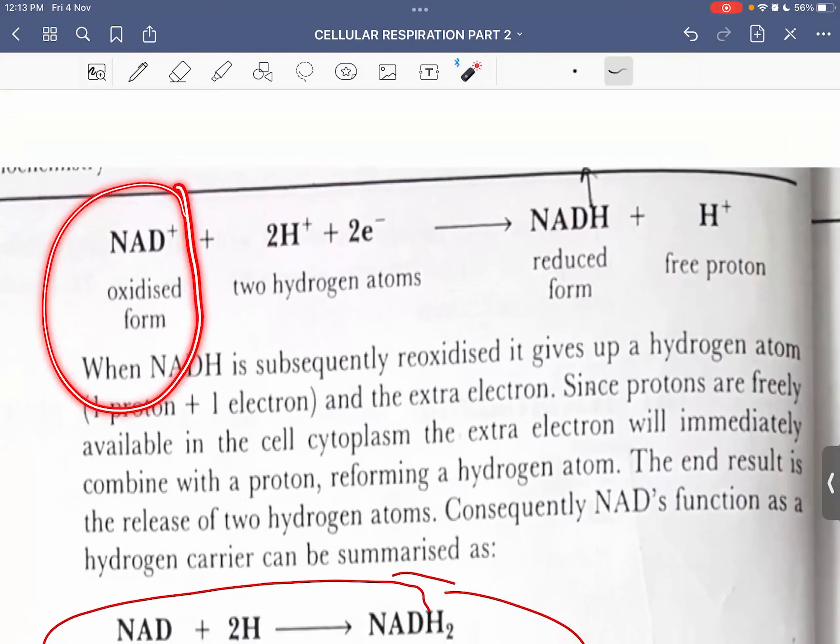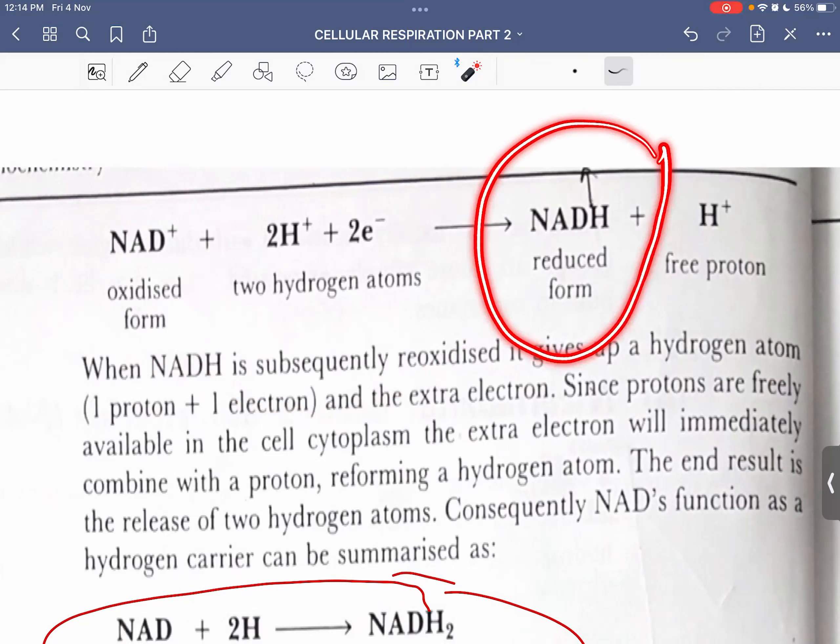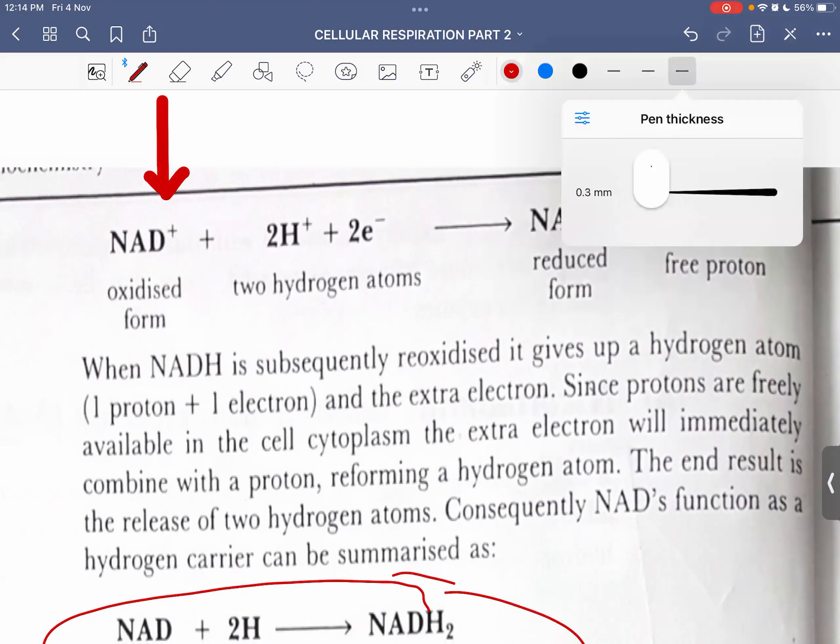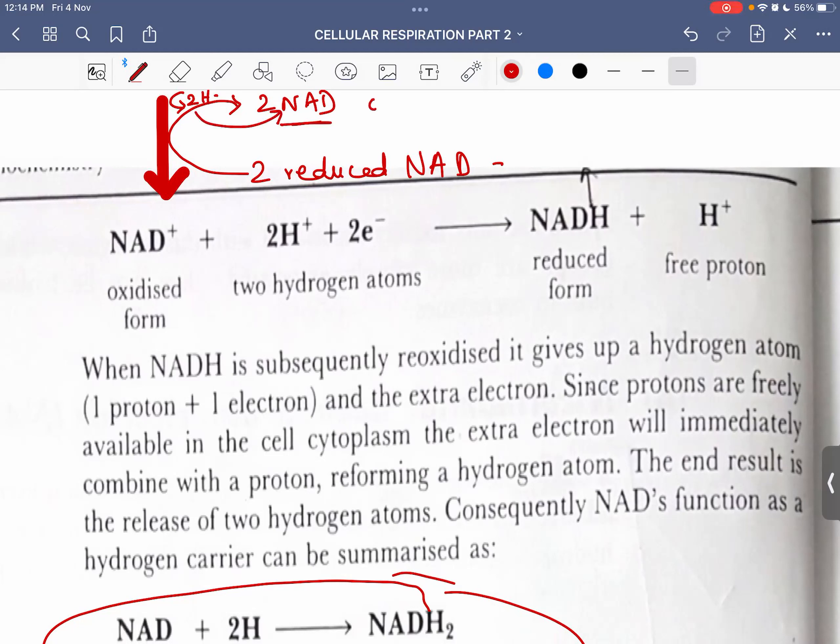NAD in the oxidized form means it has not yet accepted the hydrogen atoms. As it accepts it, it becomes NADH or we can say reduced NAD. This equation will make sense like in glycolysis - I'm going to write two NAD and then two reduced NAD. When 2H goes to NAD, they will change NAD from an oxidized state to a reduced state.